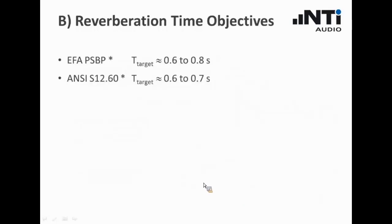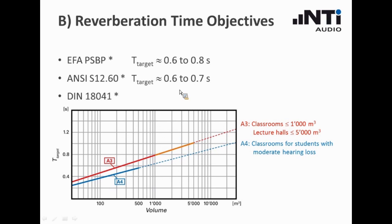What are the targets for the reverberation time in classrooms? The British and the American standard, depending on the size of the room and of the purpose, have a target of 0.6 to 0.7 or 0.8 seconds. The DIN, the German standard, is a little bit more sophisticated. Here we have this graph which shows that depending on the volume of the room, we have a direct relation to the target RT60 time. If the room is larger, going even to 5000 cubic meters, it can be even higher. So this would be a lecture hall. In these smaller rooms, maybe you have some discussions from time to time, that is also important to have the RT60 lower.